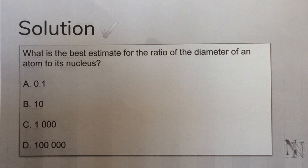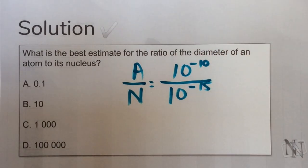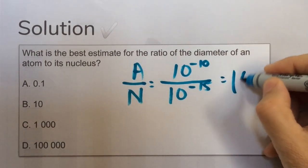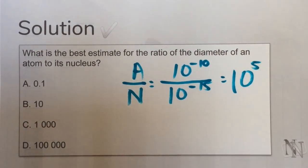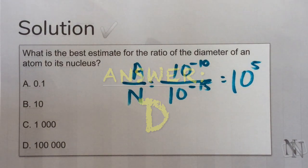Here is the solution to the question we asked earlier. IB expects you to know the orders of magnitude of atoms and subatomic particles, namely 10 to the minus 10 and 10 to the minus 15. The ratio is therefore 10 to the 5, with the larger number on top. In other words, an atom is this much larger than its nucleus.